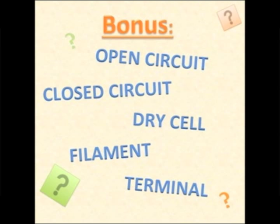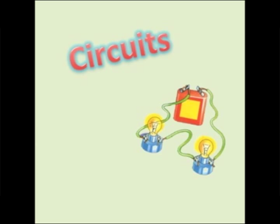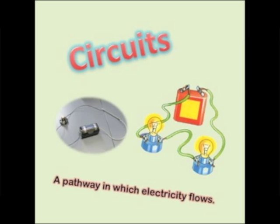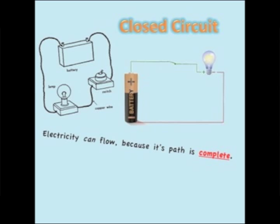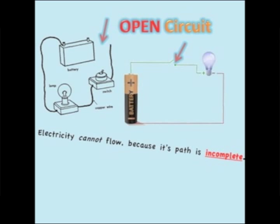Have you figured it out? In the classroom, we will be making circuits to explore how electricity works. Circuits are defined as the pathway in which electricity flows. We can create two different types of circuits: closed and open circuits. A closed circuit is an electrical circuit in which electricity can flow because its path is complete. An open circuit is one in which the electrical path is broken and electricity cannot flow.